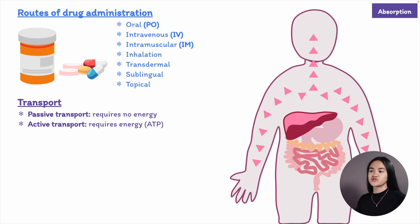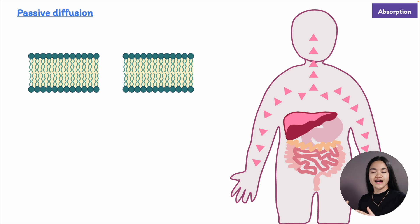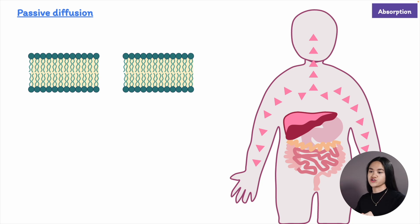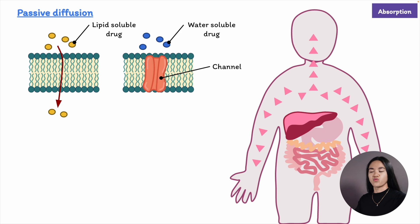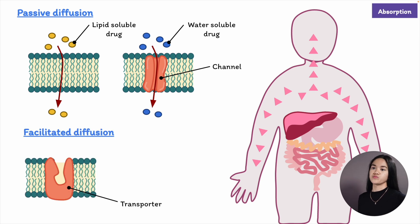There are two types of passive transport: passive diffusion and facilitated diffusion. In both, drugs move from an area of high concentration to lower concentration. Passive diffusion helps small, lipid-soluble, non-polar molecules pass through a membrane down their concentration gradient without any help, whereas water-soluble molecules pass through a channel or pore.